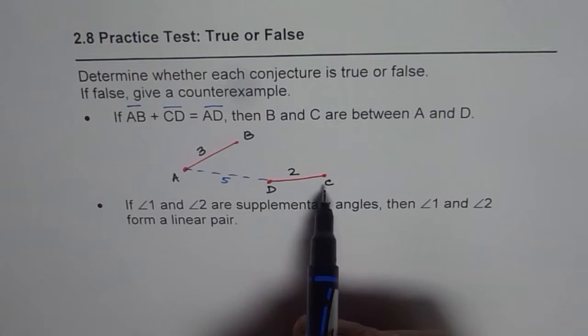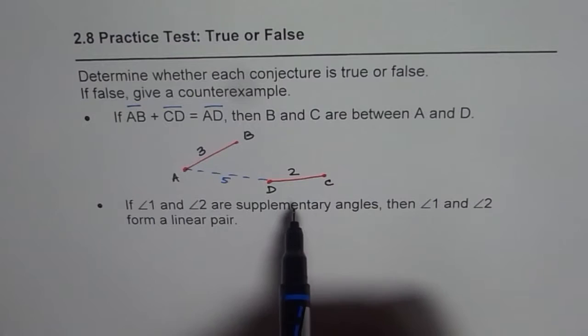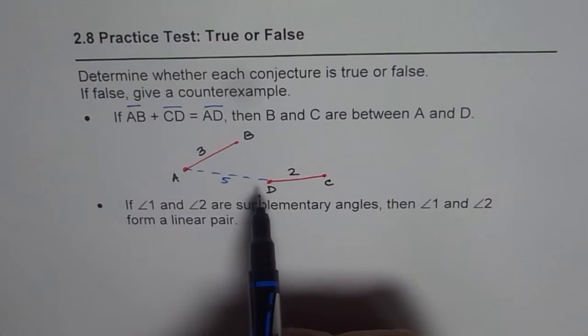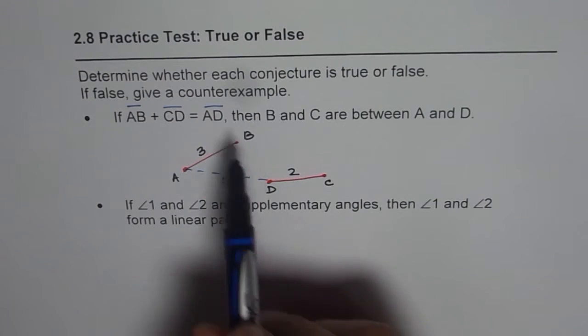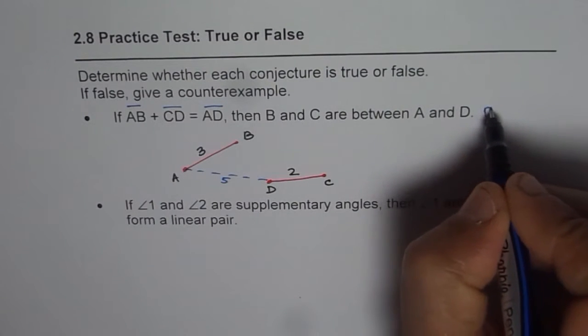They could be anywhere. So there could be many different ways of sketching it, but it will not be true. So most of the cases you'll find that this statement is false. Even if you provide one counterexample, it is enough to show that this statement is false. So this statement is false.